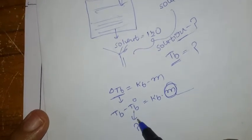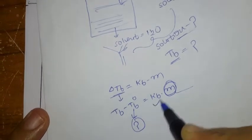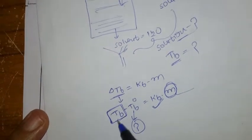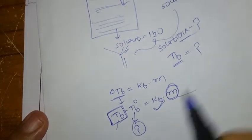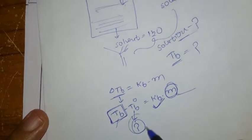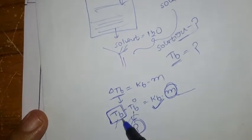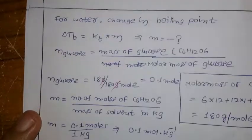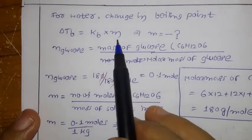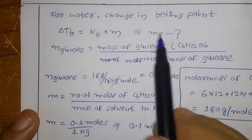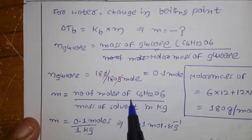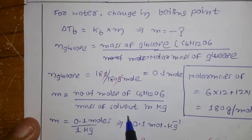We have to find Tb of the solution. Tb° is already known (boiling point of pure water). If we know ΔTb and Tb°, we can calculate Tb. Our relation is ΔTb = Kb × molality. Molality is defined as number of moles of solute divided by mass of solvent in kg.